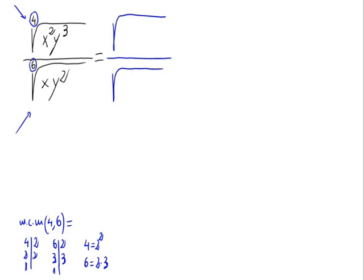So the minimum common multiple would be the common numbers between 4 and 6 raised to the biggest exponent. That would be 2 squared times the 3 of the 6, and 2 squared times 3 is 4 times 3, and that is 12. So 12 will be the index of our new roots.